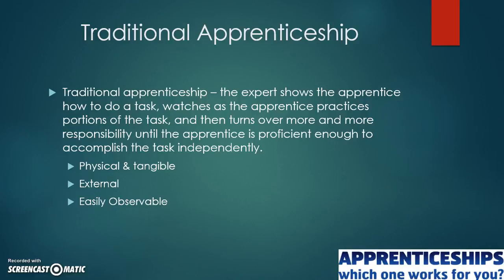Traditional apprenticeship is a learning or teaching model where learners can see the processes of work and learn by observing it physically, and by being involved in the various processes that lead to the accomplishment of a particular task. It is a learning method where the expert shows the apprentice how a task is done, and after a few times hands over to the apprentice to work on the same task as that person becomes more proficient.